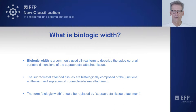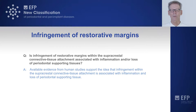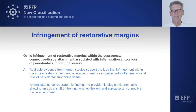Regarding infringement of restorative margins: available evidence from human studies supports the idea that infringement within the supracrestal connective tissue attachment is associated with inflammation and loss of periodontal supporting tissue. Animal studies corroborate this finding and provide histologic evidence showing an apical shift of the junctional epithelium and supracrestal connective tissue attachment once such an infringement has taken place.